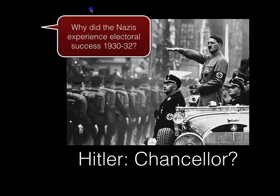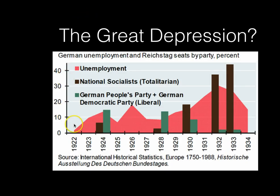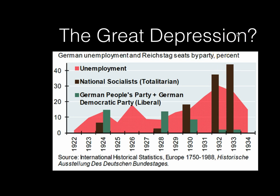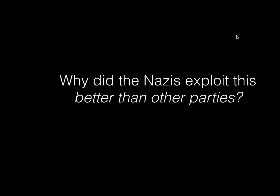So why did they experience electoral success? Was it the Great Depression? It's tempting when you look at this graph. The sort of pink continuous line here is unemployment. And you can see, after 1930, unemployment rises significantly. By the middle of 1932, it's close to 30% — 6 million people. And it appears that the Nazi vote is rising in line with unemployment. A simplistic but mistaken correlation would be that unemployed people are voting for the Nazis. We'll see that the Great Depression did help the Nazis in gaining votes, but it wasn't that unemployed people were voting for the Nazis in vast numbers. They basically managed to exploit the Great Depression more effectively than other parties.